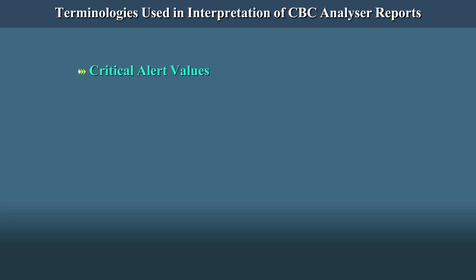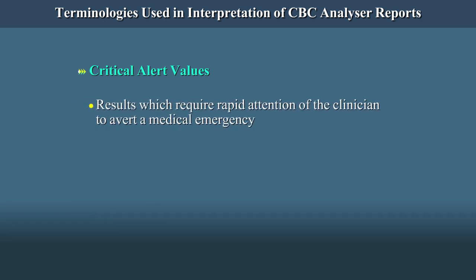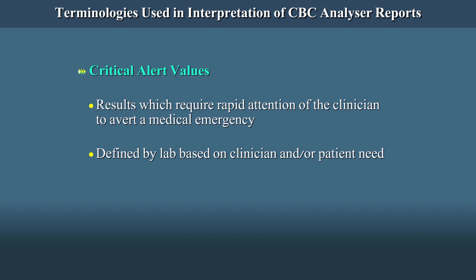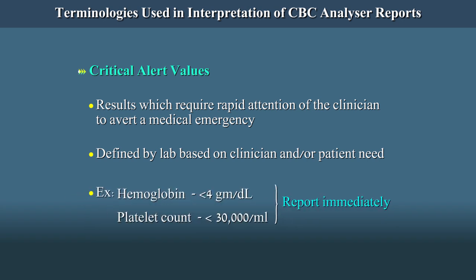Critical Alert Values are results which require rapid attention of the clinician to avert a medical emergency. These values are defined by the lab based on clinician and/or patient need. For example, a hemoglobin value of less than 4 grams per deciliter or a platelet count of less than 30,000 per ml should be reported immediately to the treating clinician or the patient as per laboratory policy. Tietz's textbook of biochemistry has a good database on critical alerts.